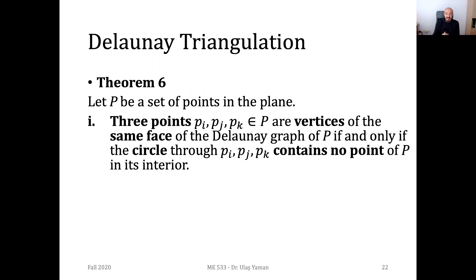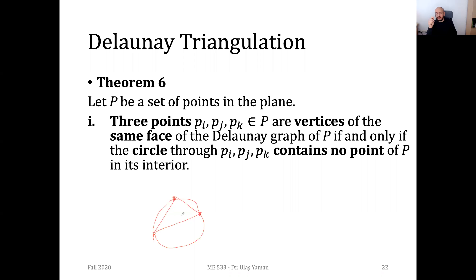Now we have theorems related to this triangulation. We have points P — three points that are vertices of the same face of the dual graph. If points i, j, k are vertices of the same face of the dual graph of point set P, if and only if the circumscribed circle passing through these three points contains no other site inside it. So if you cannot locate a point inside the circumcircle, the triangle belongs to the Delaunay graph.